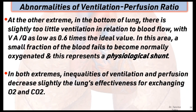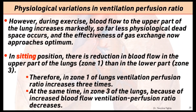At the base, the ratio is as low as 0.6 times the ideal value. In this area, a small fraction of blood fails to become normally oxygenated, representing physiological shunt. In both extremes, inadequacies of ventilation and perfusion decrease slightly the lung's effectiveness for exchanging oxygen and carbon dioxide. However, during exercise, blood flow to the upper part of the lung increases markedly, so little physiological dead space occurs and the effectiveness of gas exchange approaches optimum.